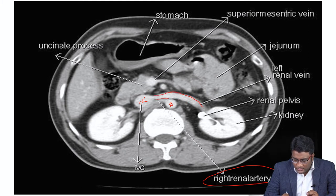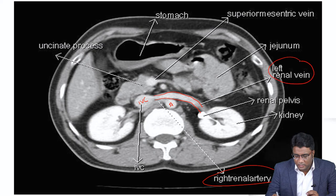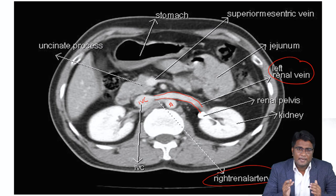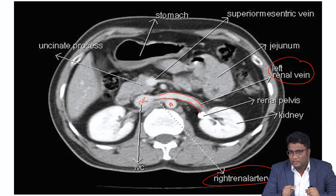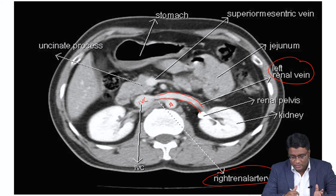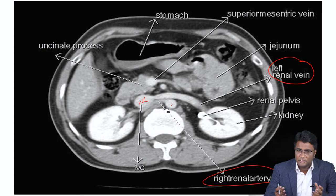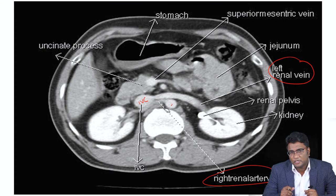From the inferior vena cava, this vein coming towards the left kidney would be the left renal vein. You should be able to tell which is the renal artery and which is the renal vein by tracing them back to the aorta or back to the inferior vena cava. The right renal artery traces back to the aorta, and the left renal vein drains into the inferior vena cava.